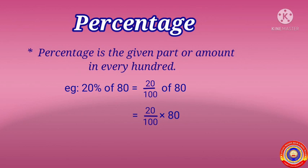Therefore 20 percentage of 80 is equal to 20 by 100 of 80, that is equal to 20 by 100 into 80. There are two zeros in both the numerator and the denominator, therefore we cancel the two zeros. After cancelling the zeros we got 2 into 8, that is equal to 16. Therefore 20 percentage of 80 is equal to 16. Is it clear for you children?